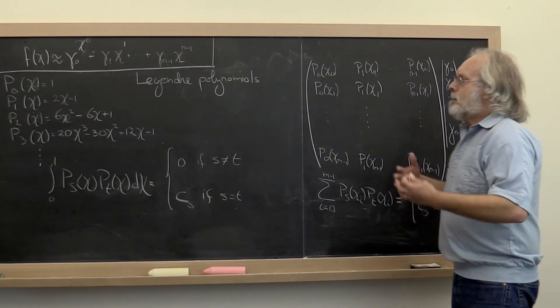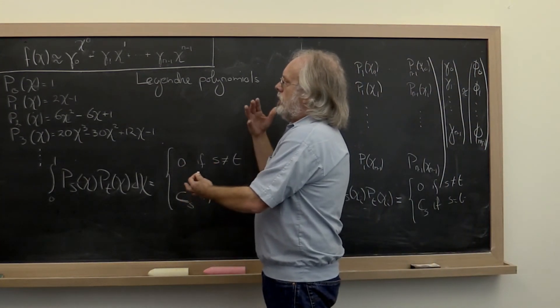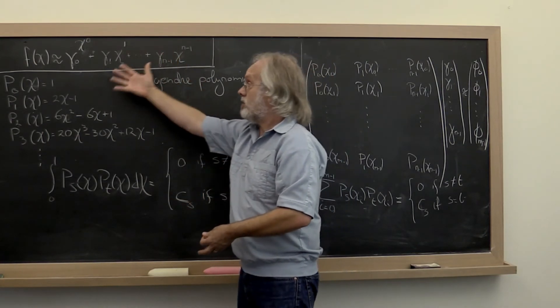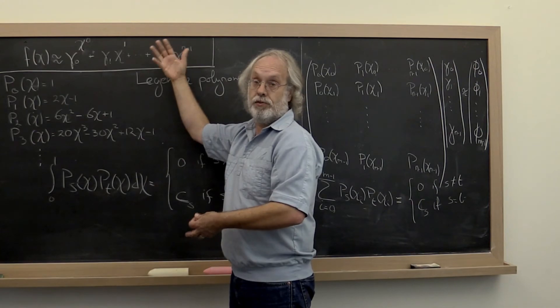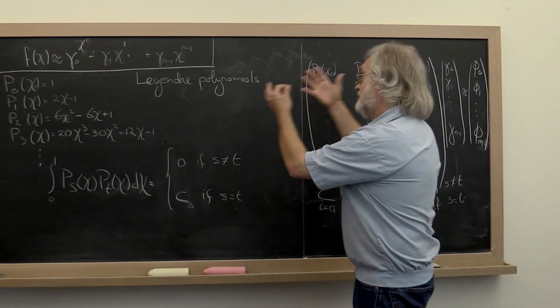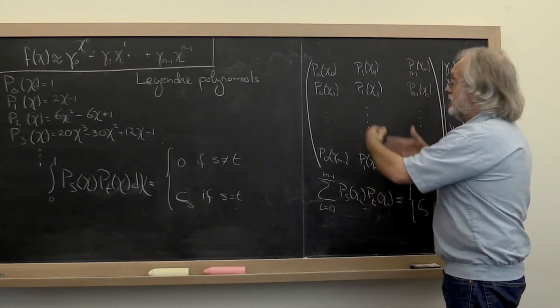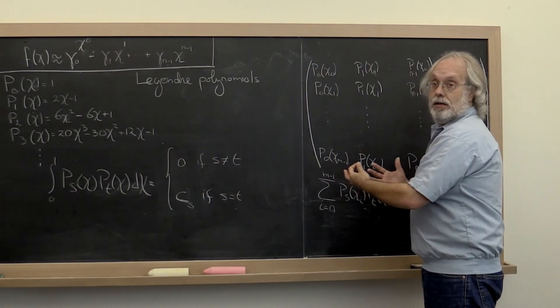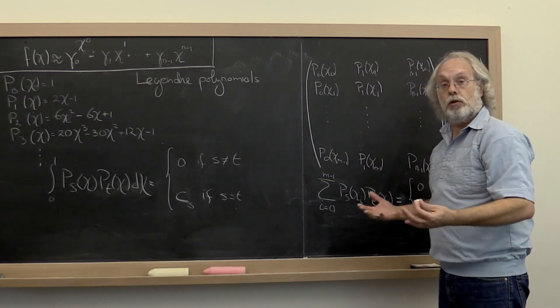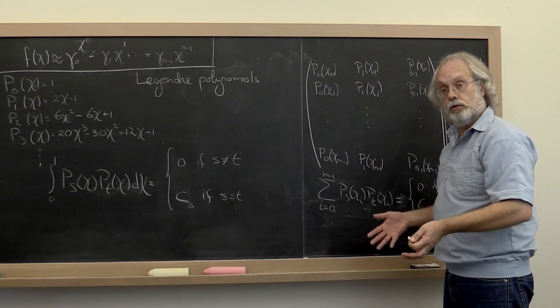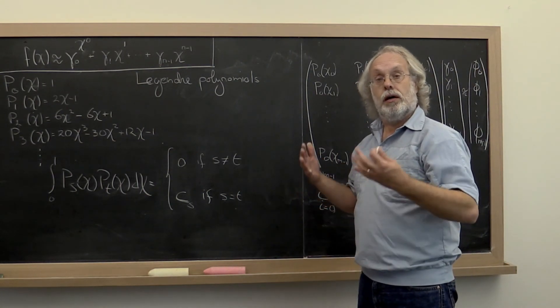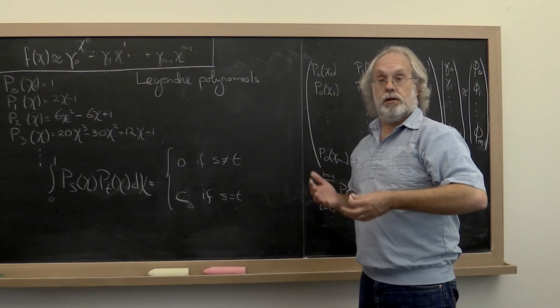So by picking the polynomials that we use as a basis for our approximation with an n minus 1 degree polynomial, we now create a linear system that has a matrix that has columns that are approximately mutually orthogonal. Not orthonormal, but orthogonal. And that translates into a matrix with a much better condition number.